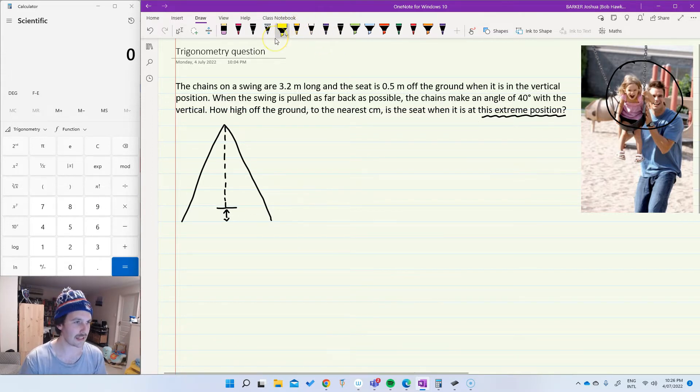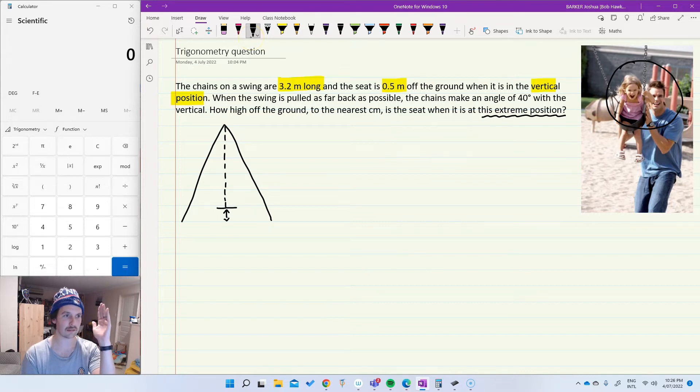So the first bit of information is that chains on the swing are 3.2 meters long. The seat is 0.5 meters off the ground when it's in the vertical position. Okay, so vertical position we take as being the swing literally in the straight up position like the vertical position before it's been pulled in either direction. So in this diagram that I've prepared in advance, my chains here are 3.2 meters in length. Height off the ground is 0.5 meters. Okay, that's piece of information number one.